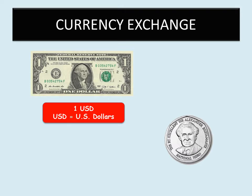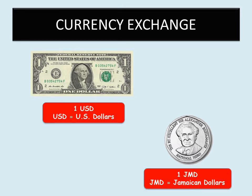One USD stands for one U.S. dollar, and one JMD stands for Jamaican dollars. Now we know Jamaican currency and U.S. currency — which one values more? If we have one U.S. dollar and one Jamaican dollar, which one would value more? If you said the U.S. dollar, you are correct. One U.S. dollar values more than one Jamaican dollar.